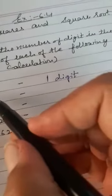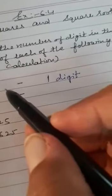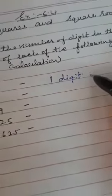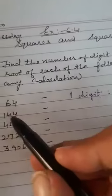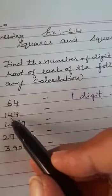So, if a number has 2 digits, then the square root will have 1 digit. And if any number has 3 and 4 digits...